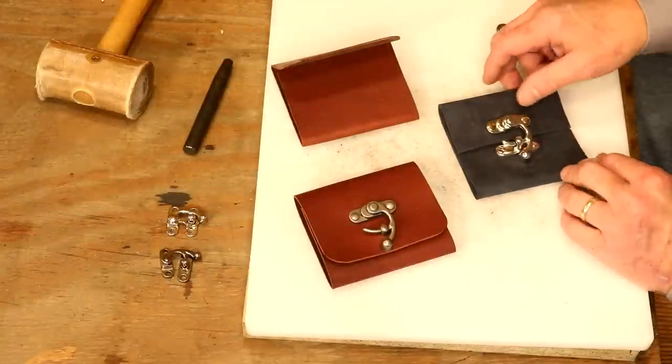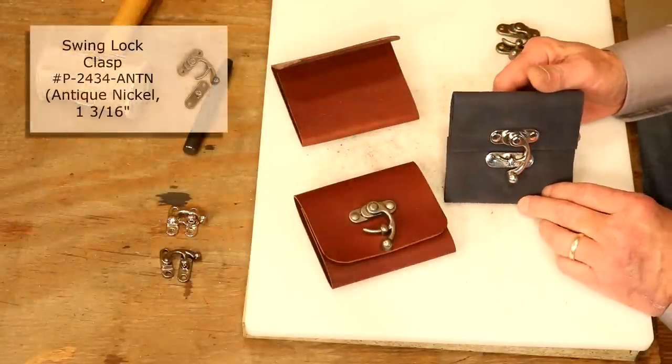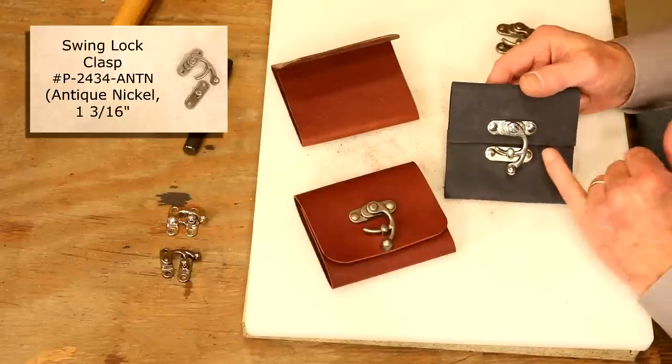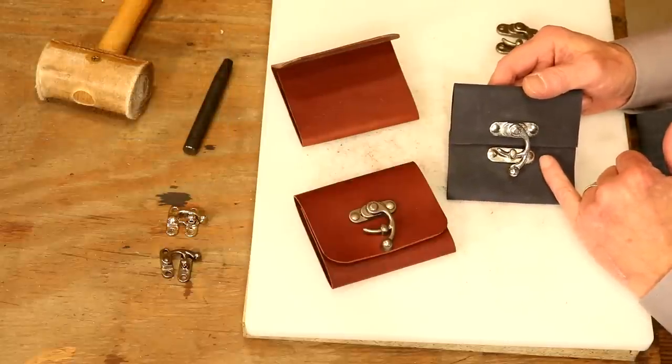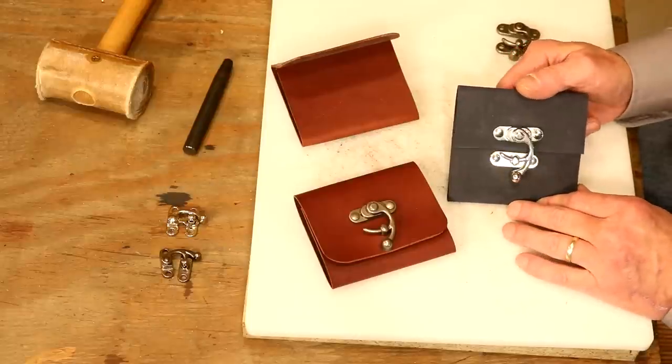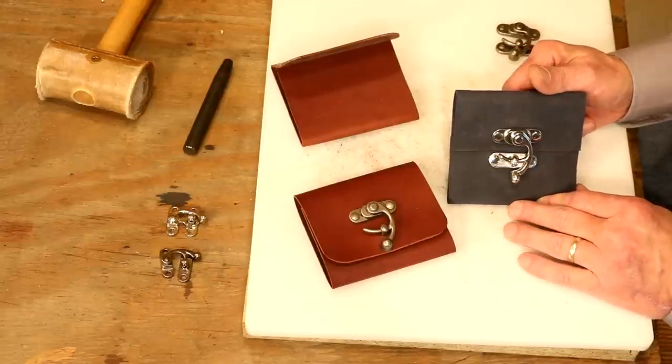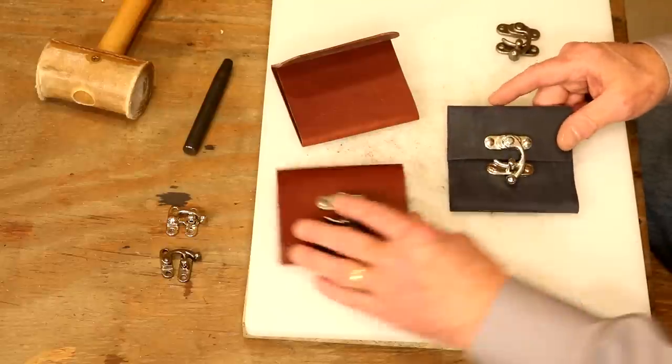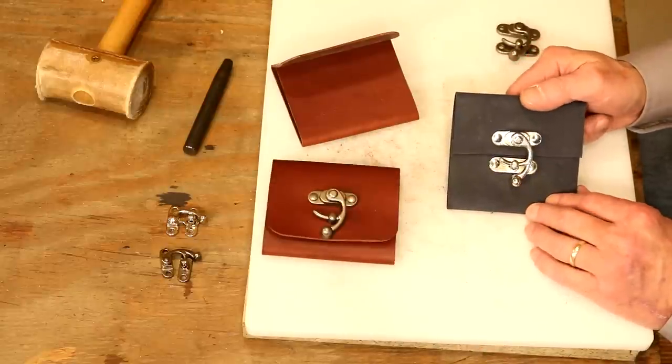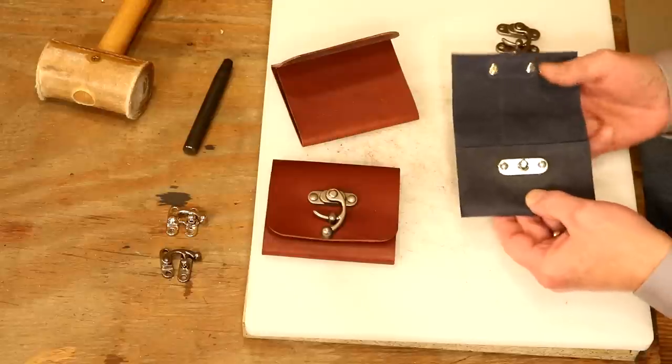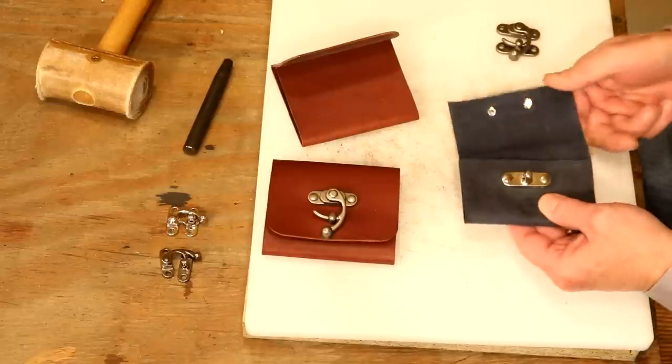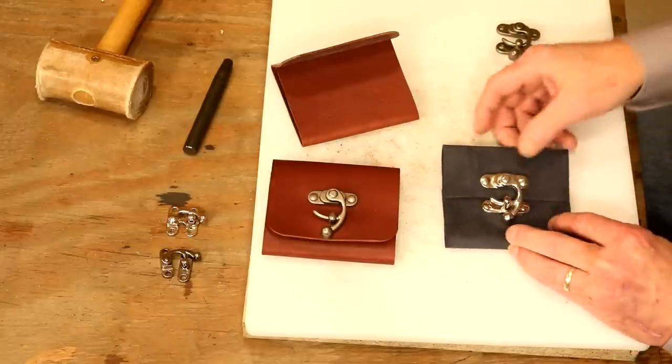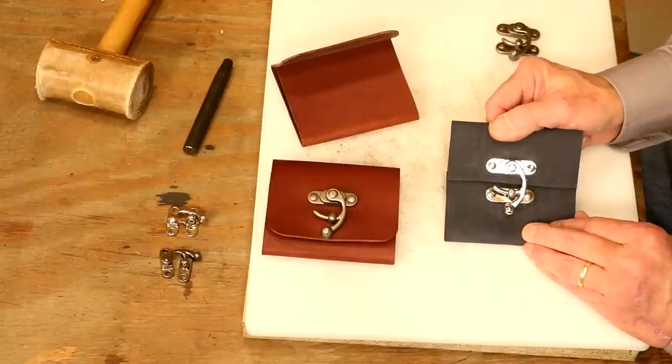One of our all-time favorite closures in leathercraft, the swing clasp. Technically, this is a swing lock clasp, but we could also call it a box closure. Goes by a number of different names, but no matter what we call it, it's a great closure. Looks good, easy to add. There's actually two ways we can add this. Standard application: say we've got a pouch. I'm going to rivet my post onto my pocket, and on my flap, there's our swing. Easy to line up, looks good.